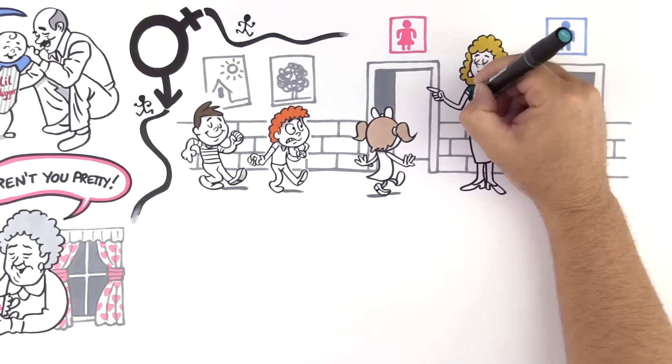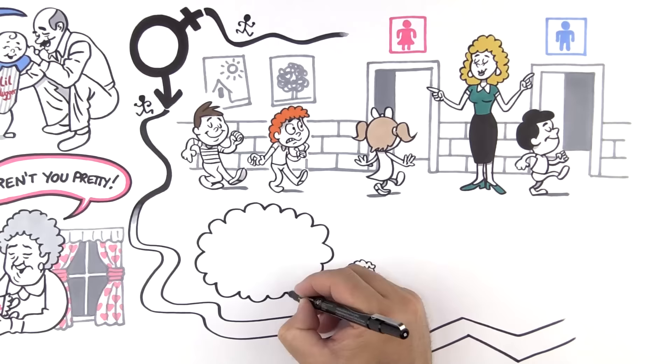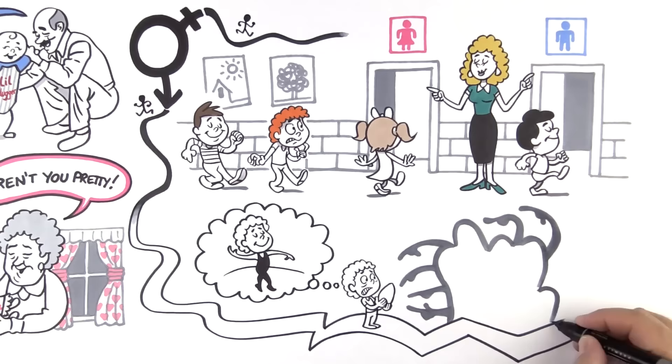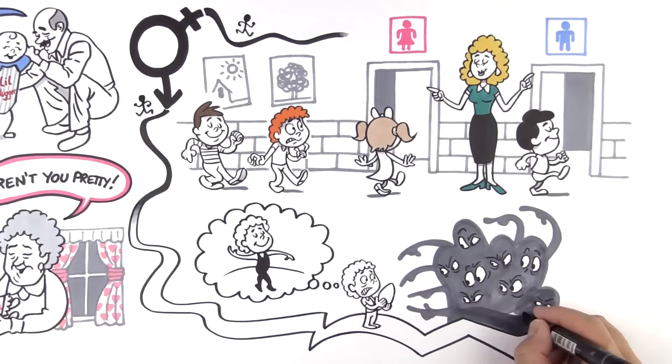For transgender and genderqueer people, however, the assignment of gender at birth is painful. Their identities create tensions and are in opposition to assigned gender roles, behaviors, and expectations from friends, family, and society. They worry, which bathroom is safe for me?